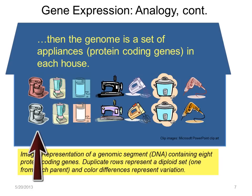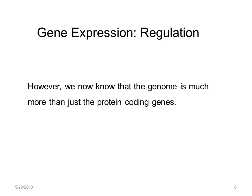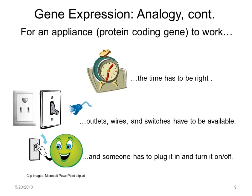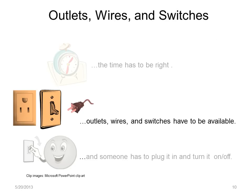Take this mixer. When it is on, it makes dough — the mRNA — which is then translated into cookies, the proteins. However, the genome is much more than the protein-coding genes. For an appliance to work, outlets, wires, and switches have to be available, and someone has to plug it in and turn it on or off. So that brings us to the concept of gene regulation — the outlets, switches, and wires.